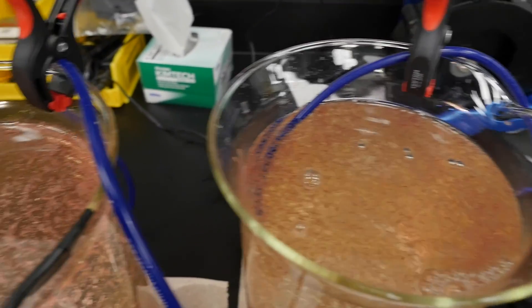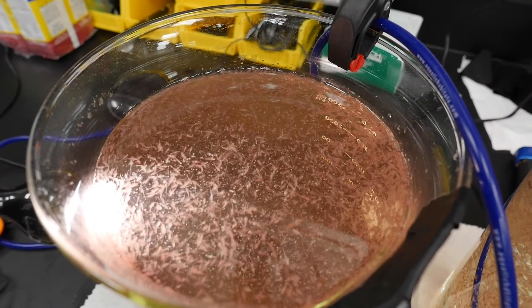Brine shrimp are phototactic, meaning they'll swim toward light. That allows us to use light sources such as lasers or LEDs to control their motion.